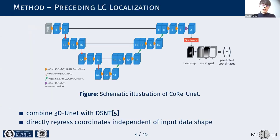The idea is to add localization as a pre-processing step in order to get rid of the sliding window approach. For this, we chose a particular network that combines the same 3D U-Net used for segmentation, but adds the so-called Differential Spatial to Numerical Transform (DSNT) at the end, which allows us to directly regress coordinates.